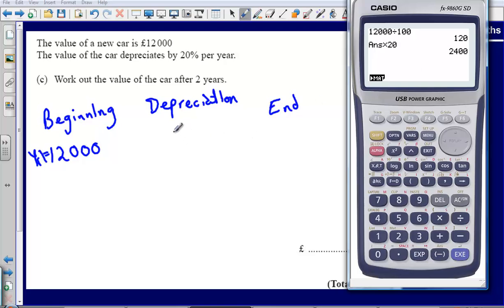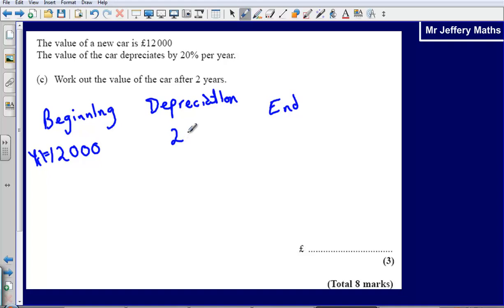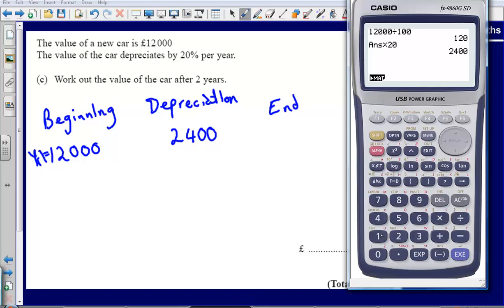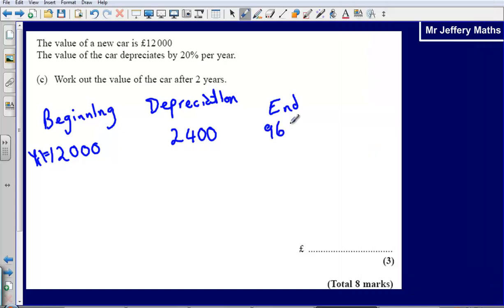So our depreciation at the end of year 1 we would be losing £2,400 from our original price. So what we will have is we will have £12,000 minus the amount that we've lost during the year which is £2,400. So at the end of year 1 we would have £9,600.